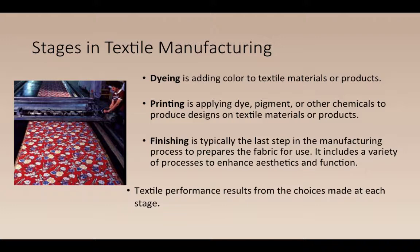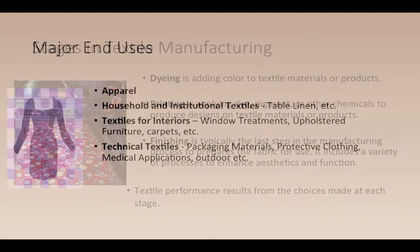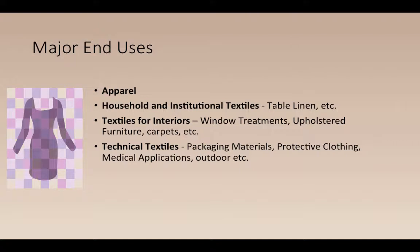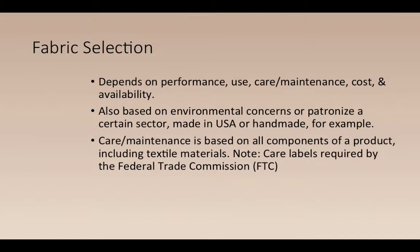Iron-free shirts are an example of chemical finishing. Children's pajamas are required by law to have a flame-retardant chemical finish — if you sell kids' pajamas without it, you're not legally allowed to market them as sleepwear. Textile performance results from the choices made at each stage, and textiles go beyond apparel to include household textiles and institutional textiles like table linens, draperies, upholstered furniture, carpets, and fabric wallpaper.